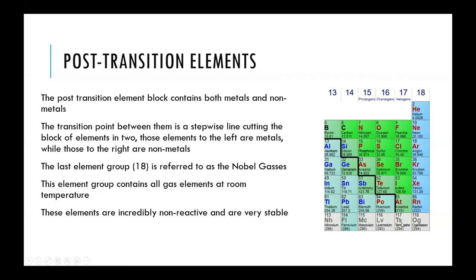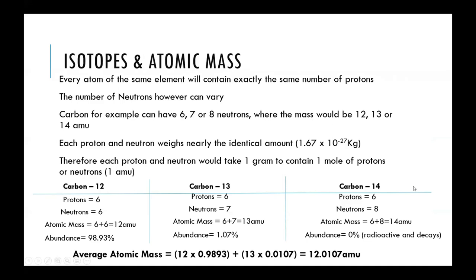Group 17 is also referred to as the halogens. These include things like fluorine, chlorine, and bromine, and they would make things like chloride for sodium chloride, and fluoride that's in tap water or that the dentist will put on your teeth. Each group has a set of properties that are unique for these individual groupings.